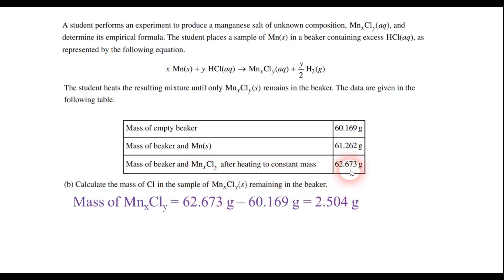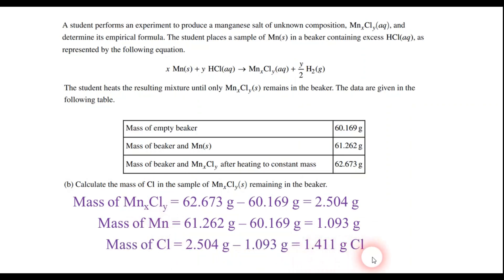First of all, we need to figure out how much MnCl, or that manganese chloride compound, is there. So we have to subtract 62.673 minus the mass of the empty beaker, and I get 2.504 grams. We also have to figure out how much manganese we had starting with as the reactant. So I'm going to take the 61.262 grams and subtract the mass of the empty beaker, and I find that we have 1.093 grams of manganese. So if we know the mass of the manganese chloride product and the mass of the manganese reactant, we just have to subtract those to find that the mass of the chloride was 1.411 grams of chlorine.